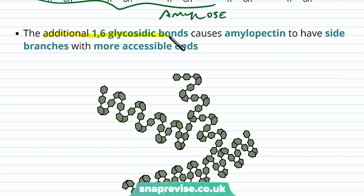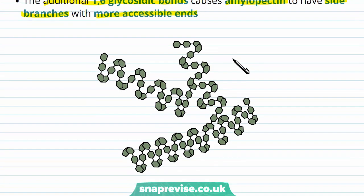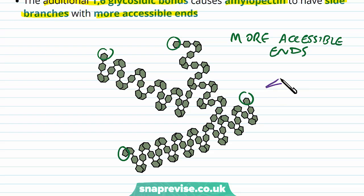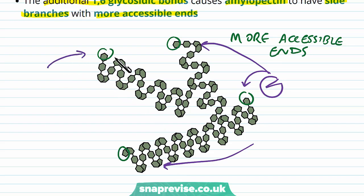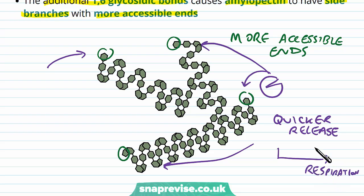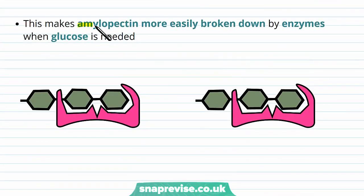The additional 1,6 glycosidic bonds cause amylopectin to have side branches with more accessible ends. So now we have multiple accessible ends — and of course there will be more than just a few. This is really useful because if the amylase enzyme comes along, it has more places to cut away alpha glucose. This means a quicker release of alpha glucose, and therefore quicker entry into respiration to meet the energy demands when something needs it. More accessible sites means amylopectin is more easily broken down by enzymes whenever glucose is needed.